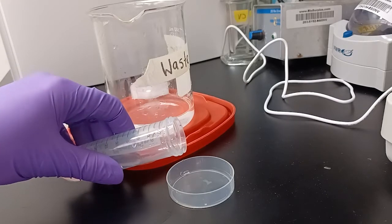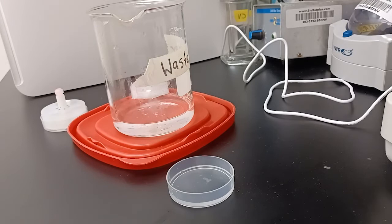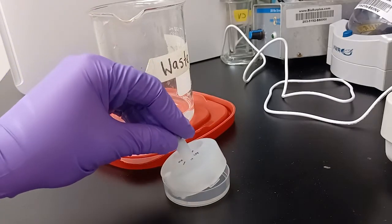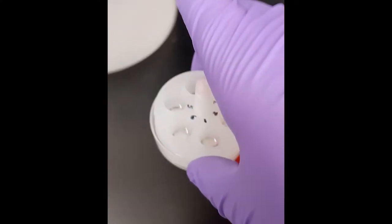We still have two more rinses to do, however. Pour new 1x PBS solution into all three basins, reinsert the netwell inserts, place them all back on the shaker, and turn the speed to slow.